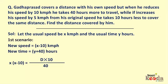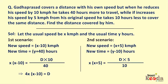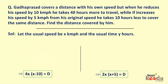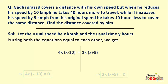Similarly, in the second scenario, new speed will be x+5 km per hour and new time will be y−10 hours. Once again putting the values in the shortcut, we get x(x+5) = D × 5/10. On further simplifying, 2x(x+5) = D. Here we can see that both equations represent the distance travelled. Therefore putting both equations equal to each other: 4x(x−10) = 2x(x+5).